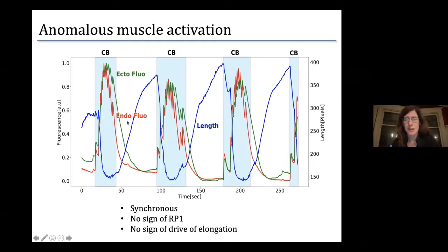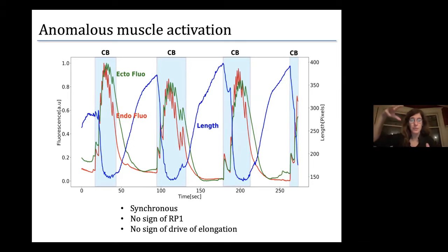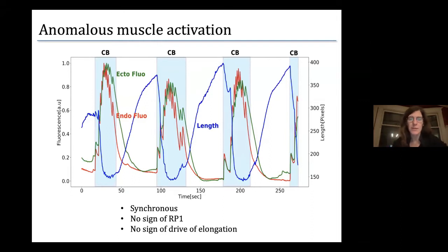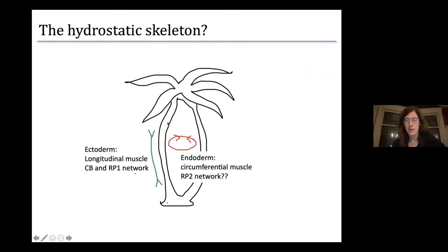Looking at the length of the animal over time — the contraction: the length gets smaller, there are several bursts of the nerve net that contract the animal down to its smallest possible size, and then it elongates again. Looking at the integrated fluorescence in the muscle layers of both ectoderm and endoderm together, something anomalous appears: their activity is basically synchronous. One might have expected the ectodermal muscles to contract first to get small, then the endodermal muscles to elongate again — out of sync — but in fact they fire completely together.